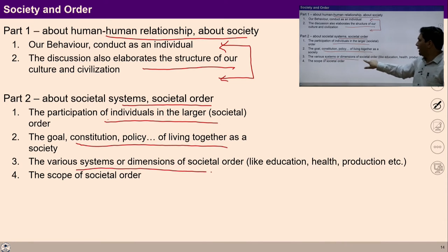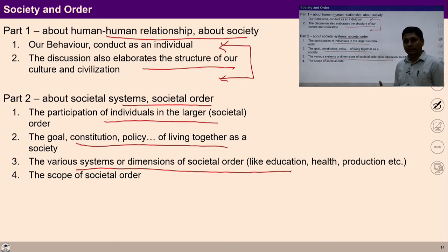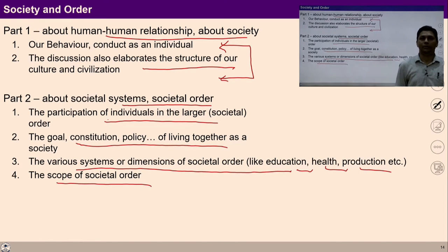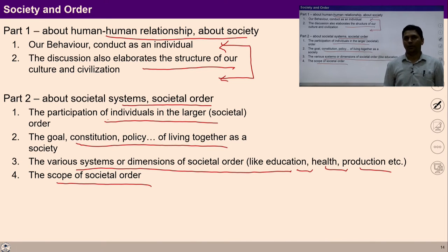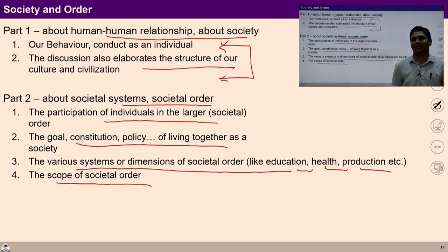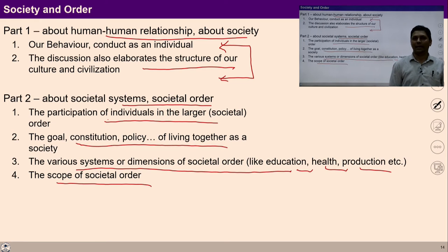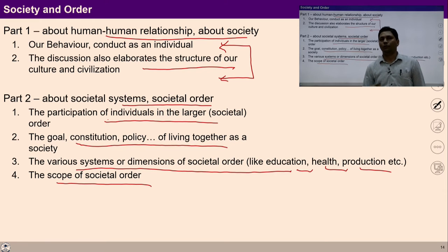Then the various systems or dimensions of social order — we will study these dimensions in detail, like the dimension of education, dimension of health, dimension of production, etc. We will also see the scope of societal order. Summing up, the course will talk about the nature of my conduct and behavior as an individual, and the nature of our conduct and behavior while living collectively. A societal system can be observed from an individual point of view and from the collective point of view of societal order.